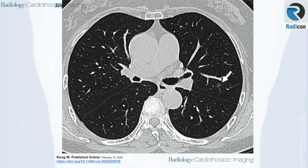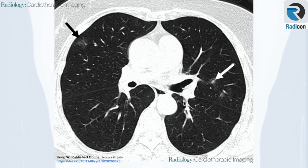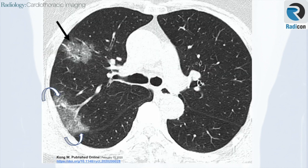An axial chest CT at presentation shows a small solitary nodular ground glass opacity in the left upper lobe. In the same patient, there is progression of airspace disease three days later with new foci of ground glass opacities as well as developing consolidation. There is high peripheral attenuation with ground glass opacities more centrally, representing a reverse halo sign.